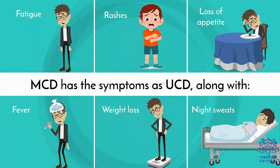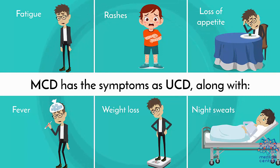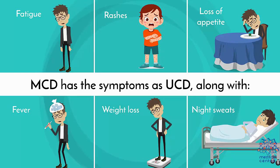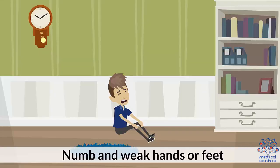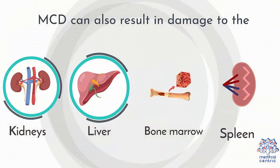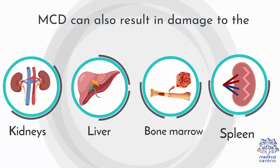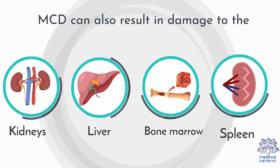You will feel full without eating and may have trouble eating if the affected node is inside your belly. MCD has the same symptoms as UCD, along with fatigue, rashes, loss of appetite, fever, weight loss, night sweats, and numb or weak hands or feet. MCD can also result in damage to the kidneys, liver, bone marrow, and spleen in serious cases.